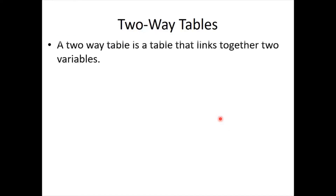So what are two-way tables? Two-way tables are basically tables that link two variables together. For example, I might say gender and favourite sport — I could ask 100 people what their favourite sport is.